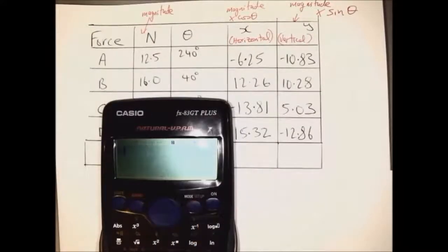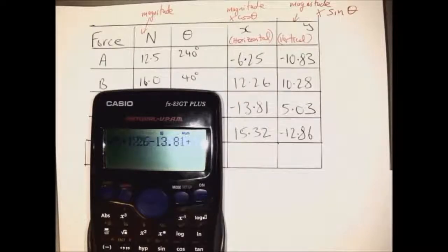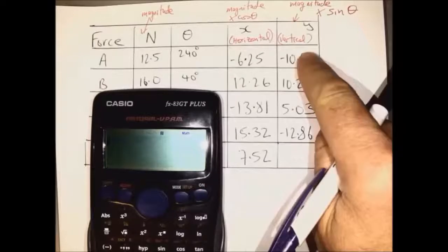Here we're being asked to figure out the magnitude of the resultant. So first of all, we'll add up all the x components there, that's the horizontal components, we get 7.52.